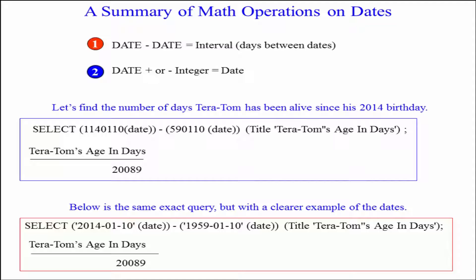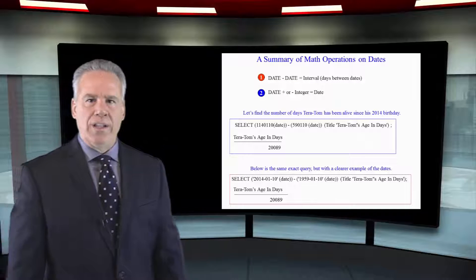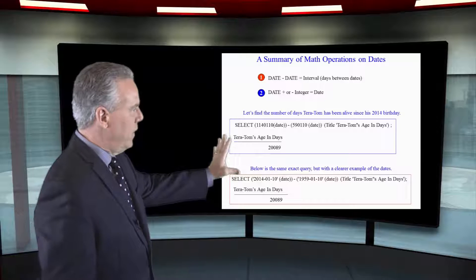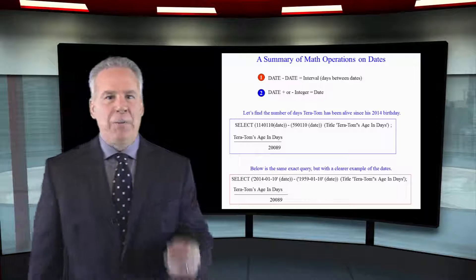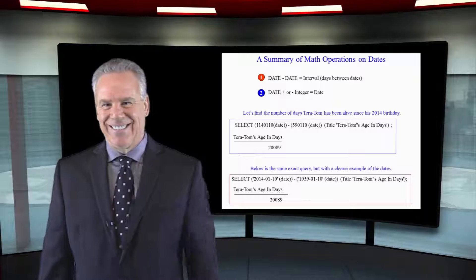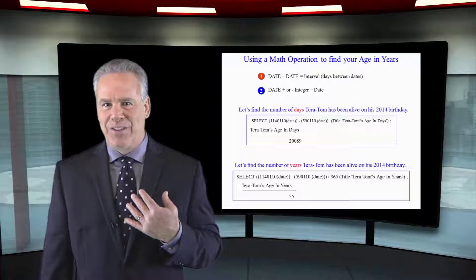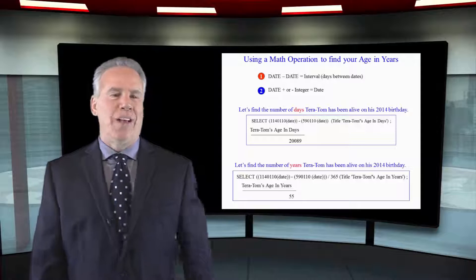Now down below you can see, once again, we're going to run the same query but it's a little clearer because I actually say select the date of 2014-01-10, make sure they know it's a date, and then of course 1959-01-10, and I'm going to get the same answer. We just found out the number of days I've been alive since January 10th 2014.